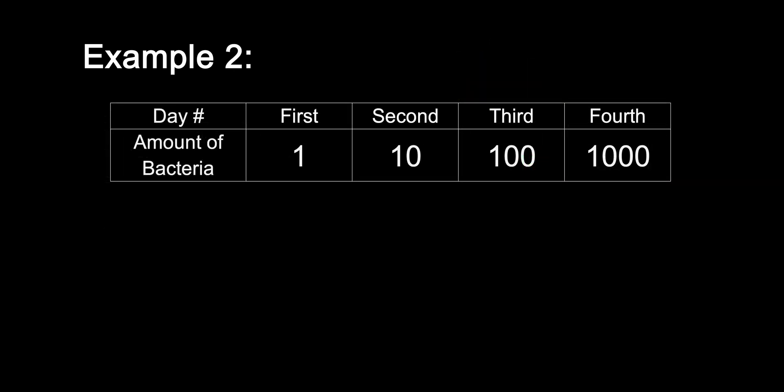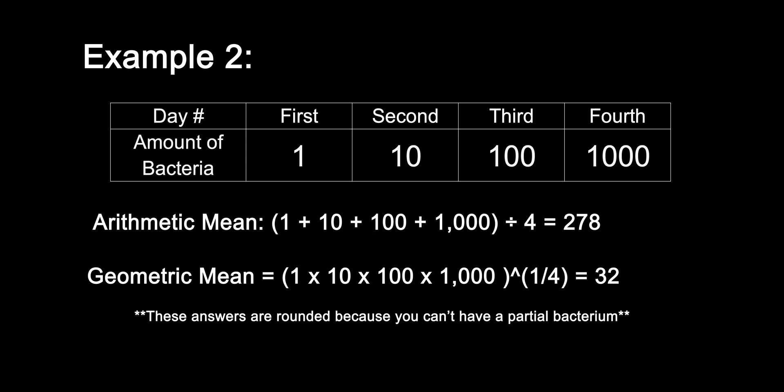For the second example, I want to show how using the geometric mean takes into account the relative size of the numbers. This is important to understand and is why geometric mean is used for reporting the average of bacteria concentrations. In this example, you have a set of four numbers representing the number of bacteria on four different days. If we were to use the arithmetic mean to find the average, we'll get an answer of 278. And if we use the geometric mean, we get an answer of 32. That's a pretty big difference. However, if you think about it in terms of the relative size of the numbers we are averaging, and remember that these are bacteria concentrations that can greatly increase or decrease day to day, it makes sense that 32 is a more accurate representation of how many bacteria there were over the course of four days. This is because out of those four days, the first three days the bacteria concentration was never greater than 100. So, it doesn't make sense for the average to be 278 when only on day four was the concentration greater than 100.